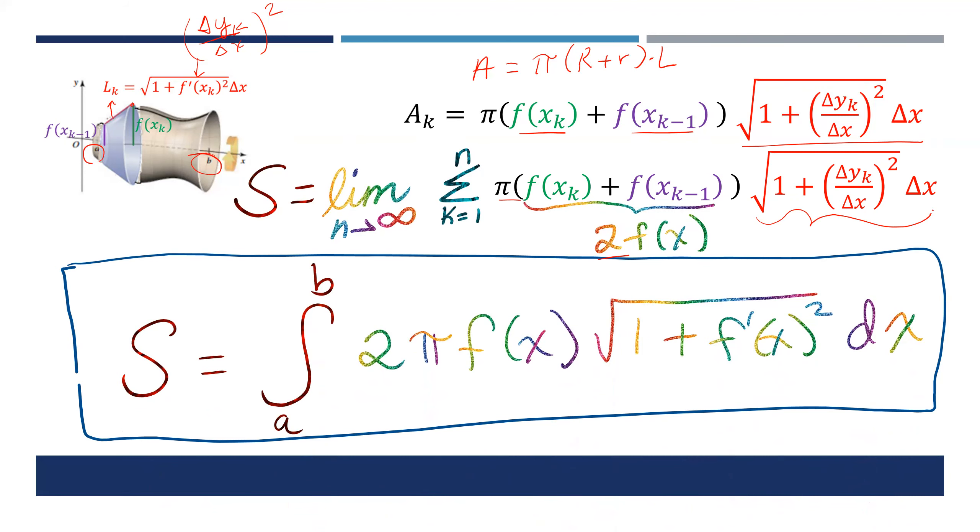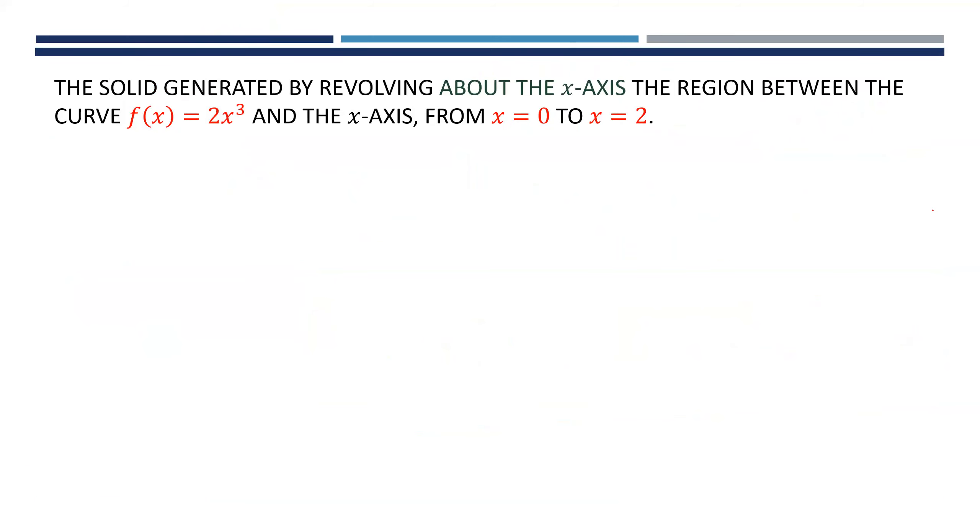We are going to use that idea and apply it to a particular example. The function f(x) in this case is 2x³, and it is bounded by the x-axis from zero to two. So we're looking at this shape right here, where f(x) equals 2x³.